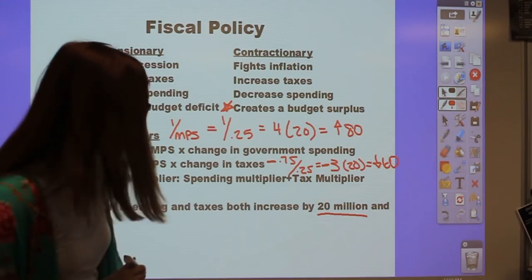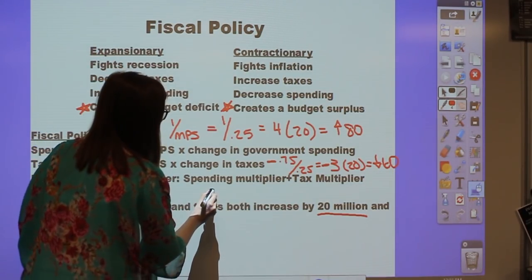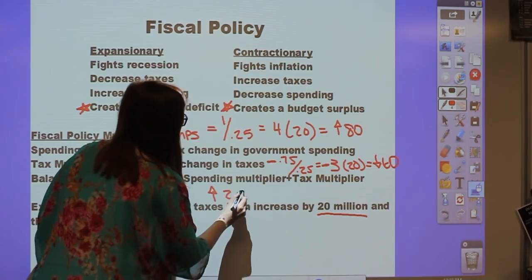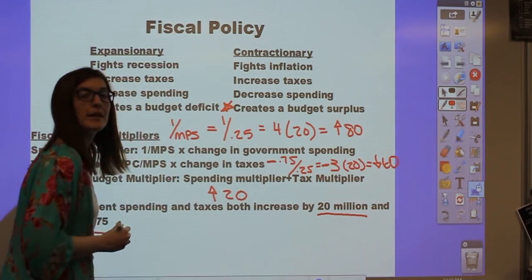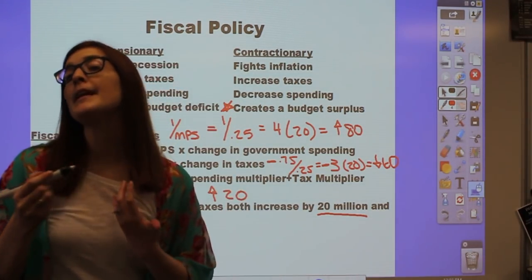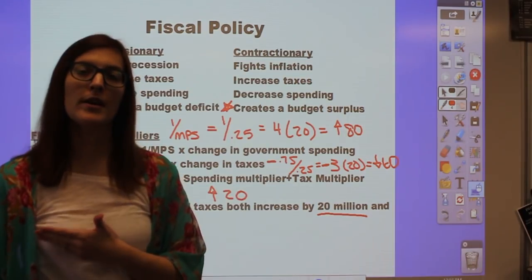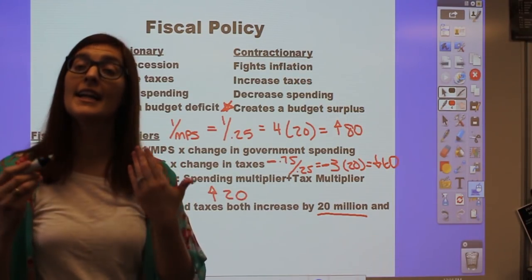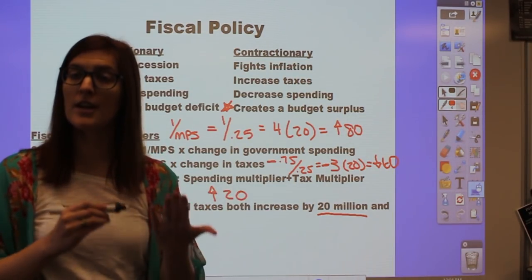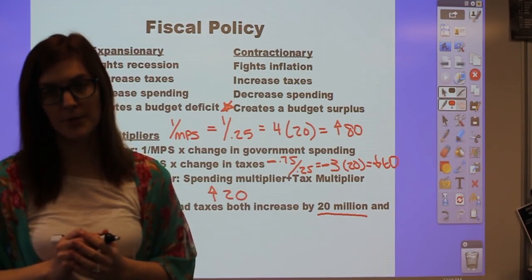This illustrates the balanced budget multiplier—combining the two. If spending and taxes are both changing by the same amount, the government has a balanced budget. But the net GDP change isn't zero; it's a positive number, because the spending multiplier is larger than the tax multiplier. In this problem, overall GDP increases by $20 million when we combine the two—GDP goes up even though the government is running a balanced budget.